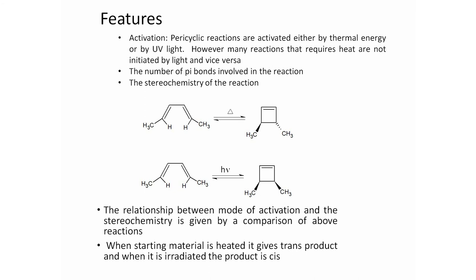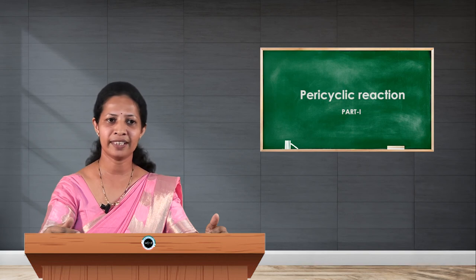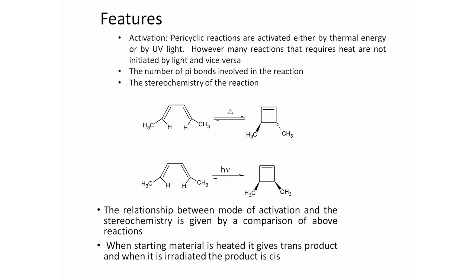For example, butadiene undergoes cyclization to give cyclobutene under thermal condition, and the product formed is trans. The same reactant undergoes the reaction under photochemical condition, but the stereochemistry of the product formed is cis. So the mode of activation directly affects the stereochemical outcome.